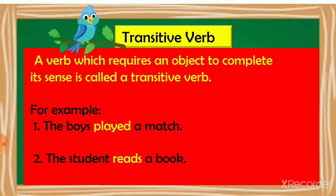In the sentence 'the boys played a match', the boys is the subject, the action performed by the boys is played, and what do the boys play? A match. So a match is the object. A transitive verb always requires an object to complete its sense.